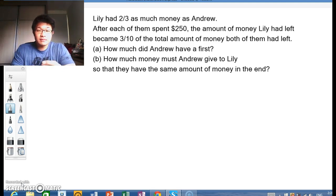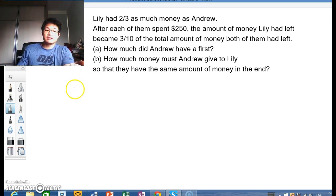Lily had 2/3 as much money as Andrew. After each of them spent $250, the amount of money Lily had left became 3/10 of the total amount of money both of them had left. So before we go any further, straight away we can tell that before spending, Lily had 2/3 as much as Andrew.